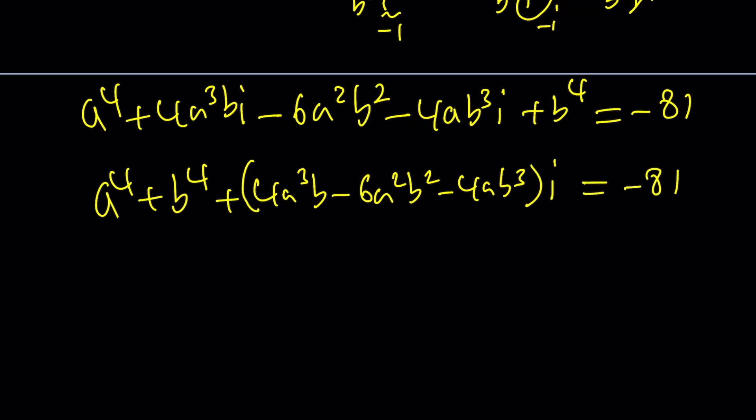And we want this to equal negative 81. This is interesting. A to the fourth plus B to the fourth minus 6A squared B squared, and then we have 4A cubed B minus 4AB cubed times I because that's the imaginary part. And on the right hand side, the imaginary part is zero because negative 81 is real. So you set the real parts equal, this is negative 81, and the imaginary part is zero. From there, you just get a system of equations. You can replace B with KA. That should give you a homogeneous system, but that's a very long story.